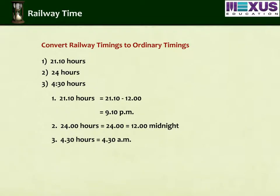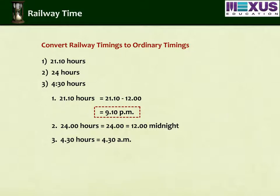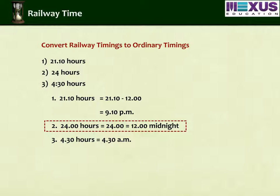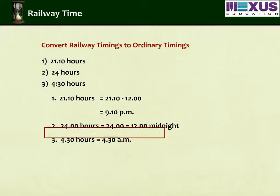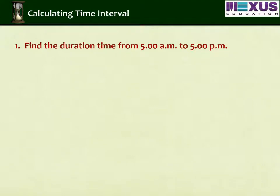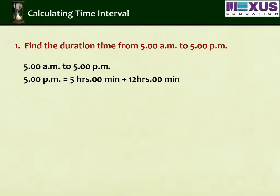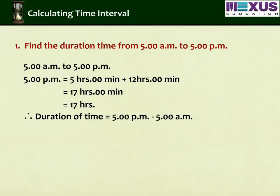Now, convert these timings to ordinary timings. Find the duration of time from 5 a.m. to 5 p.m. 5 p.m. equals 5 hours 0 minutes plus 12 hours equals 17 hours 0 minutes. Therefore, duration of time equals 5 p.m. minus 5 a.m., which is 12 hours.